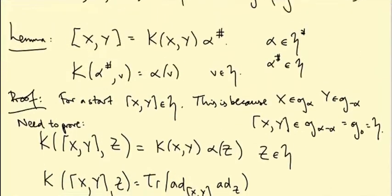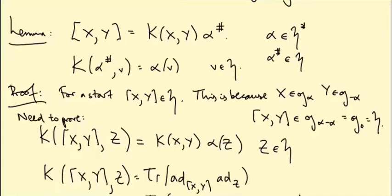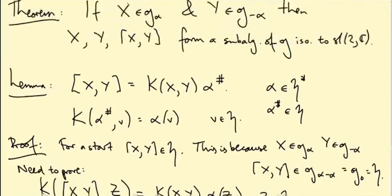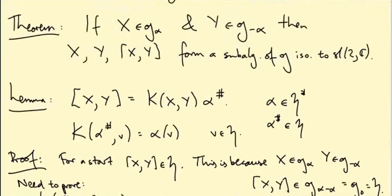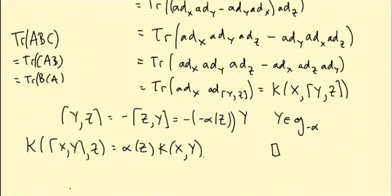Okay so we've actually identified X bracket Y and the only way it depends on X and Y is this scalar factor K(X,Y). The alpha sharp is independent of X and Y. So that'll become important later, the fact that alpha sharp doesn't really depend on X and Y. For now let's finish the proof of this theorem.